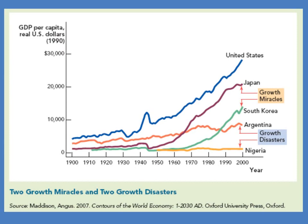There are also growth disasters—there's nothing automatic about growth. Nigeria has not grown in 50 years in terms of GDP per capita, with some ups and downs often due to oil prices, but basically no growth at all. Argentina used to be one of the richest countries in the world in the 19th century, close to US levels, yet it has failed to grow and today is poorer than South Korea and Japan, even though for much of its history Argentina was richer. If you don't install the right policies, a country can fail to grow.